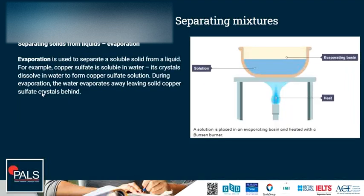How do we separate a solid from a liquid if the solid does dissolve and is soluble? We can use evaporation. It is used to separate a soluble solid from a liquid. For example, copper sulfate is soluble in water. Its crystals dissolve in water to form copper sulfate solution. During evaporation, the water evaporates away, leaving solid copper sulfate crystals behind.